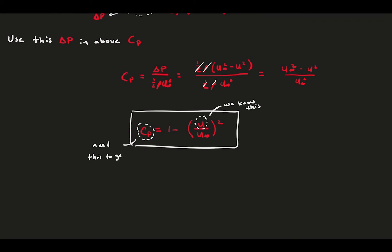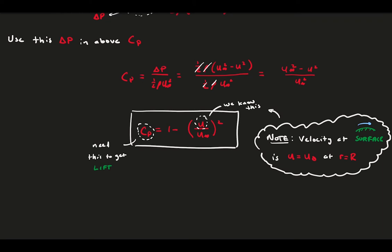Now we have a way to take what we know, the velocity field, and say something about the pressure. Note, we're going to be concerned with the flow along the surface because we want the pressure distribution on that surface. For a circle, the flow on a surface is defined to be the theta velocity at the radial location of the circle radius, where r equals big R.